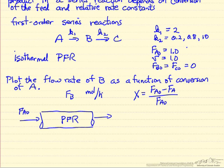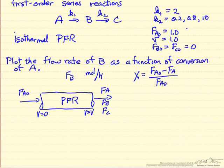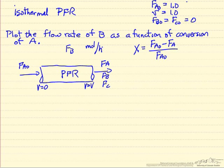We're looking at a plug flow reactor where only A enters, but A, B, and C leave. Volume is our independent variable: zero at the inlet and the final volume at the outlet. We just need to write down mass balances and solve them for this system — we'll do it numerically to make it easy to graph the results and change the values.